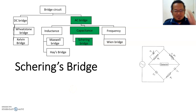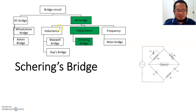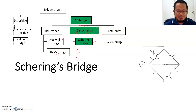Assalamualaikum and welcome back. Now we are going to talk about another type of AC bridge which is called the Schering bridge. This is another part — we talked before about bridges used to measure inductance, which are the Maxwell and Hay bridge. Now we're going to talk about another type which is used to measure capacitance. There are actually many other types of bridges but we're going to cover only the Schering bridge for now.